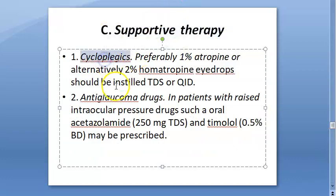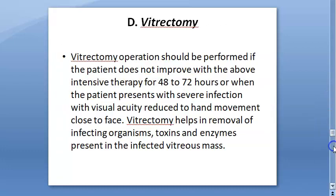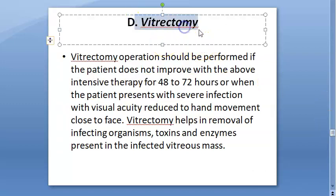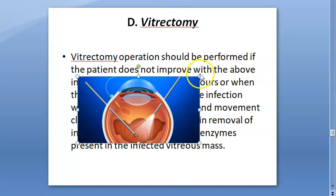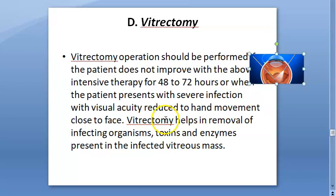Supportive therapy includes cycloplegics for pain relief and anti-glaucoma drugs like timolol and acetazolamide if intraocular pressure is high. Vitrectomy is considered when there is no response to other treatments, or in severe cases where visual acuity is reduced to hand movement close to the face — the vitreous is removed along with organisms, toxins, and enzymes.